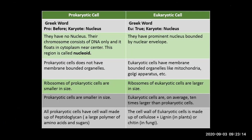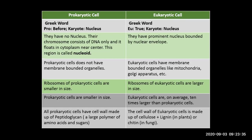The third point is that prokaryotic cells do not have membrane-bounded organelles — there is no mitochondria, Golgi bodies, or endoplasmic reticulum. There is only one organelle: ribosomes, which is not a membrane-bounded organelle. So ribosomes are present in prokaryotic cells because ribosomes don't have a membrane.